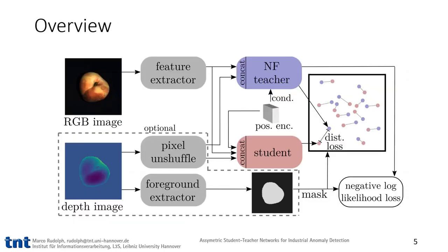This is an overview of our pipeline. For pre-processing, we obtain features of the RGB image with a pre-trained feature extractor. Optionally, we also take the depth image, where we regroup the pixels to match the feature dimensionalities and extract the foreground. The data from both domains is then concatenated and fed to the teacher and the student network. The teacher is trained via maximum likelihood training by minimizing the negative log likelihood loss. The student is trained to minimize the distance between its output and the teacher's output. If the foreground mask is available, the loss is only applied on the foreground. Furthermore, positional encoding is used to enable the detection of misplacements.